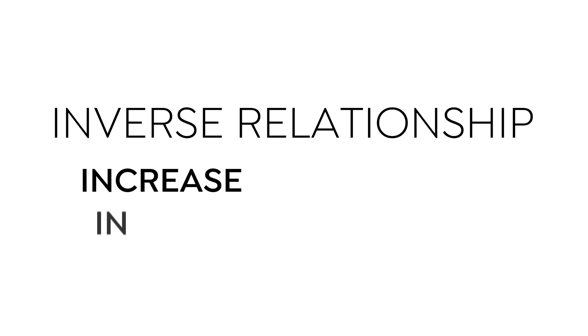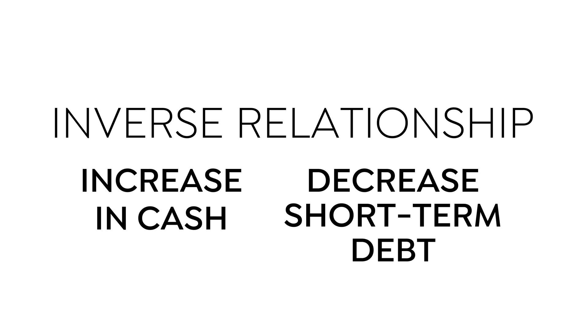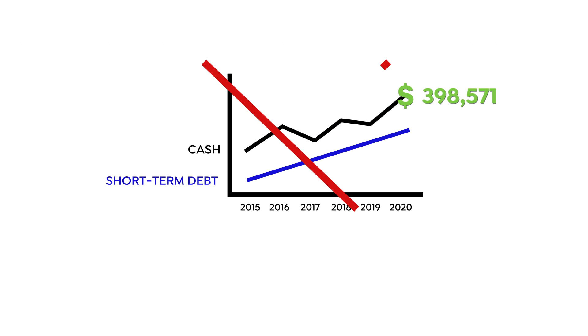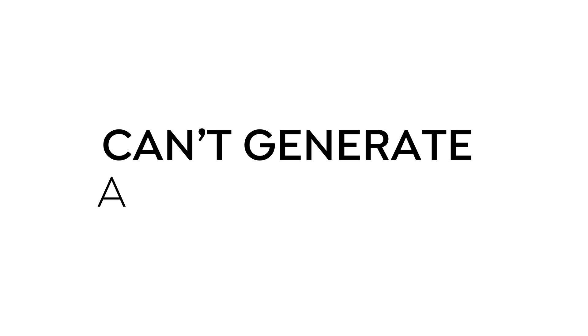Ideally, what you want to see is an inverse relationship between the increase in cash and the decrease or stabilization of short-term debt over a period of at least five years. You don't want to see cash trending up in proportion to short-term debt, because that indicates the company can't generate a profit or generate cash.